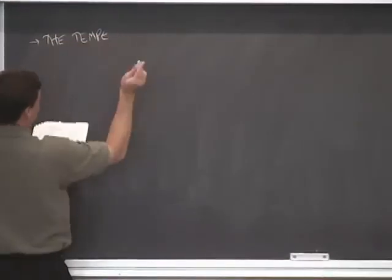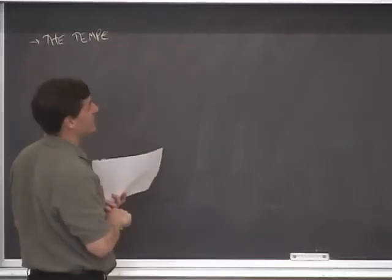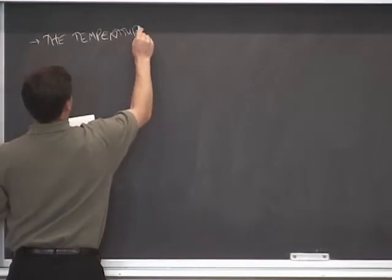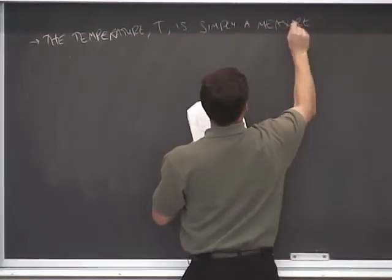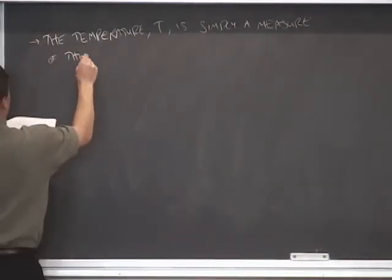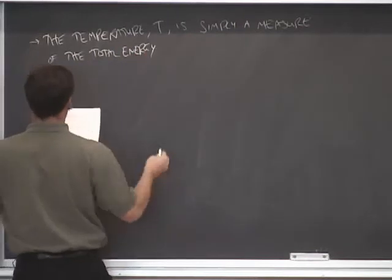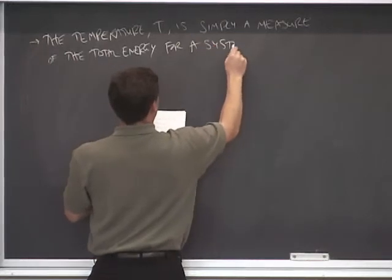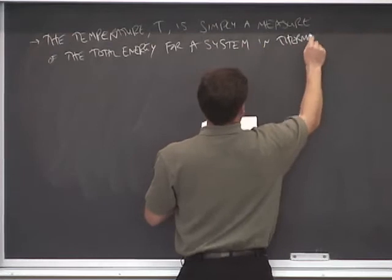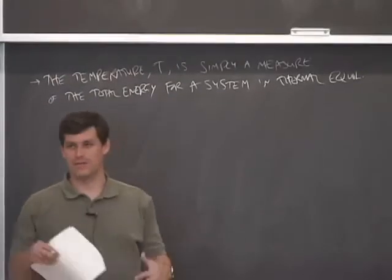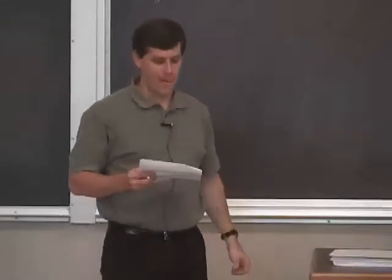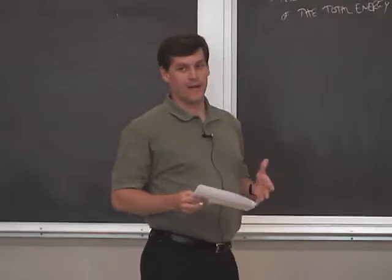That's the fundamental assumption of statistical mechanics. The temperature T is simply a measure of the total energy of the system in thermal equilibrium. We're going to try to answer that important question by employing this fundamental assumption. Temperature will be just some means of measuring the total energy in the system. What I'm going to show is that depending upon what type of particle you have, you get a different answer, and there are three classes of particles.